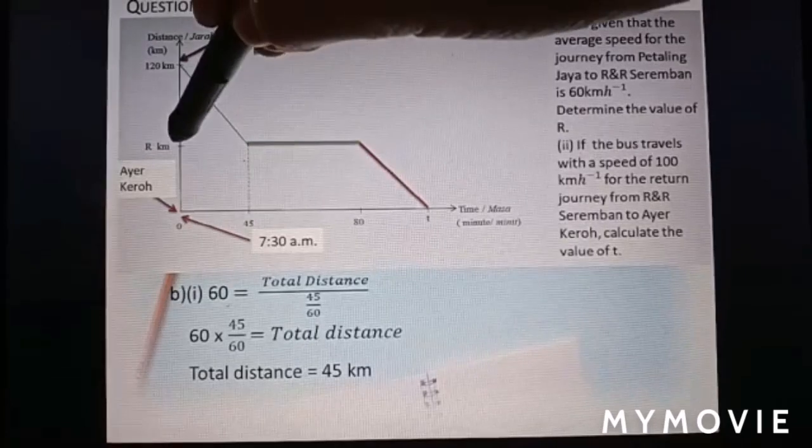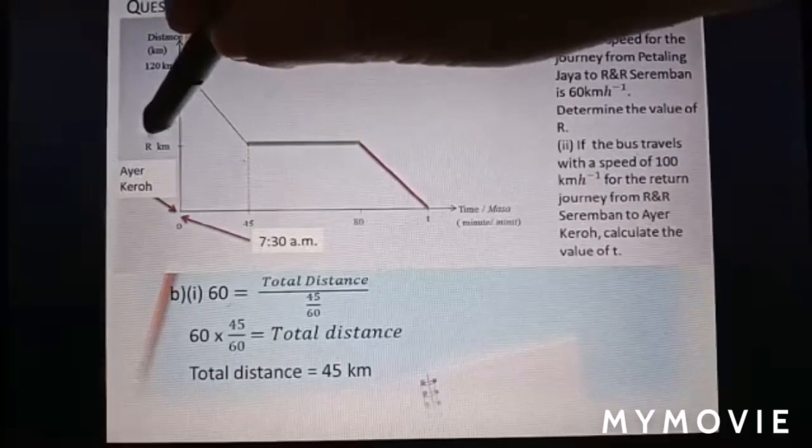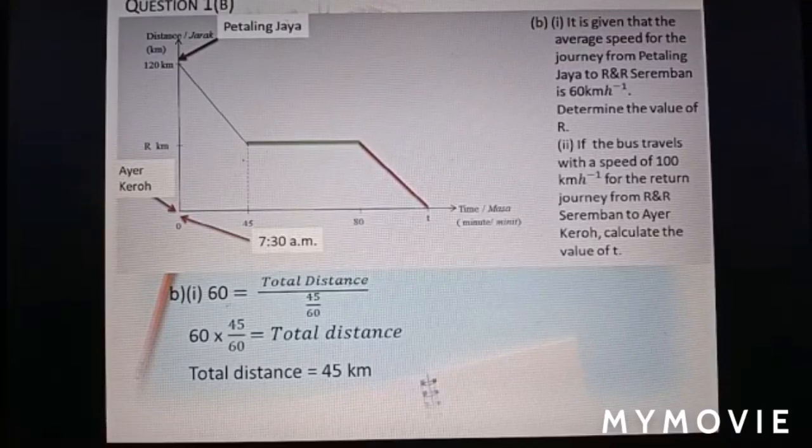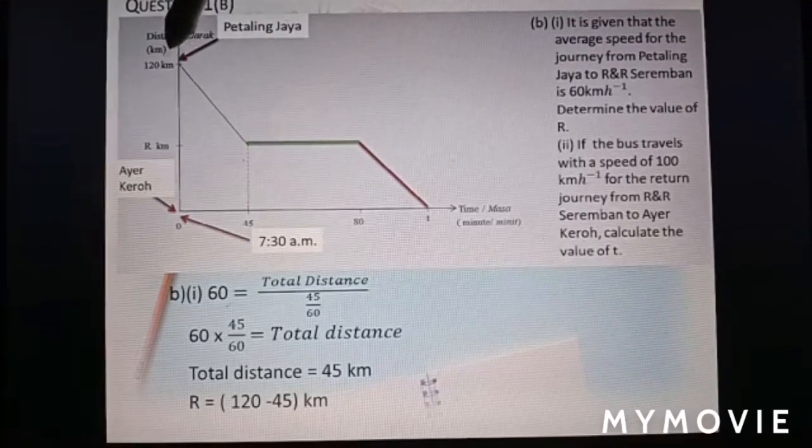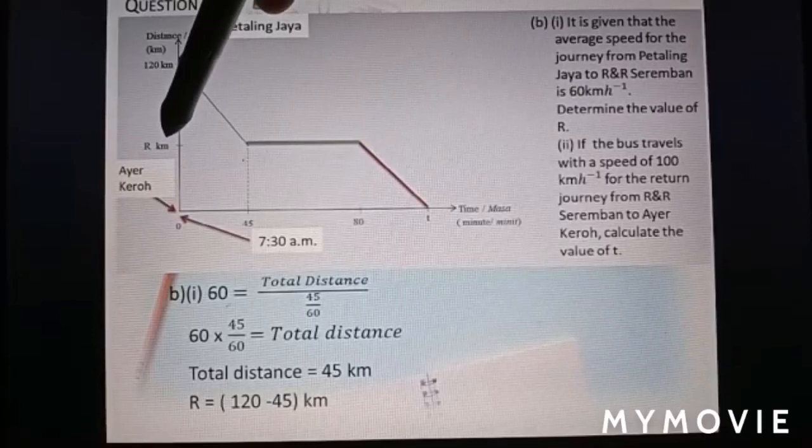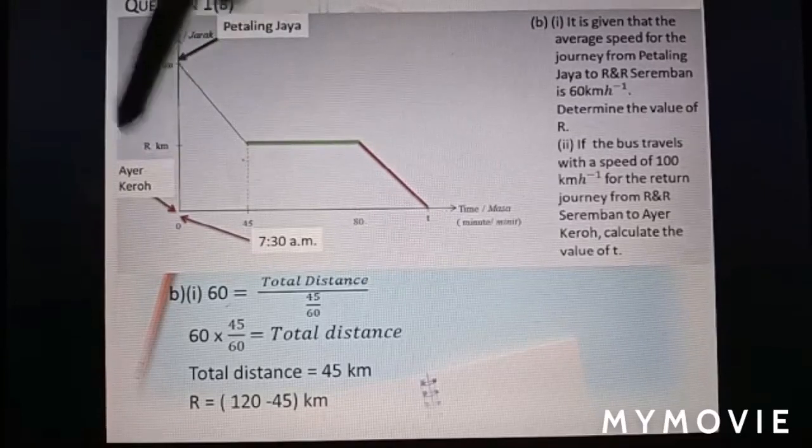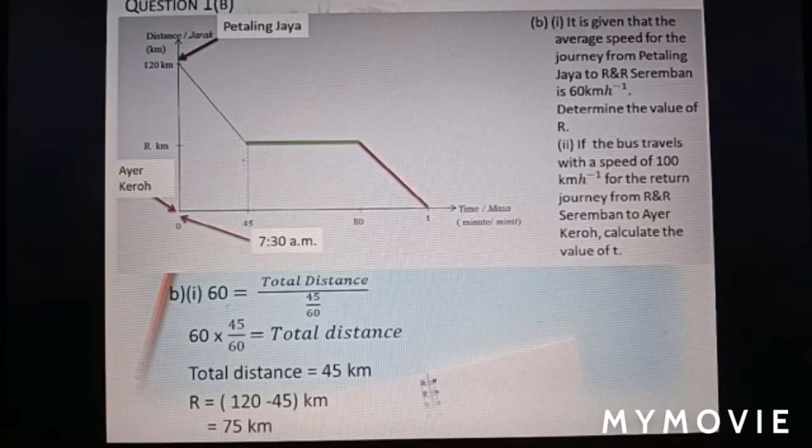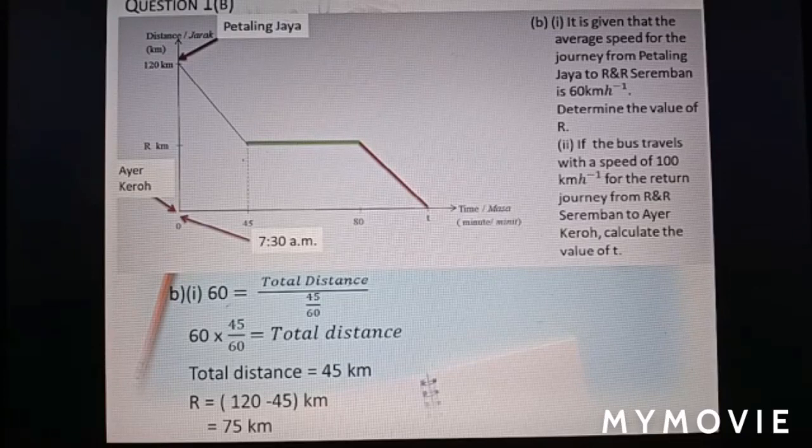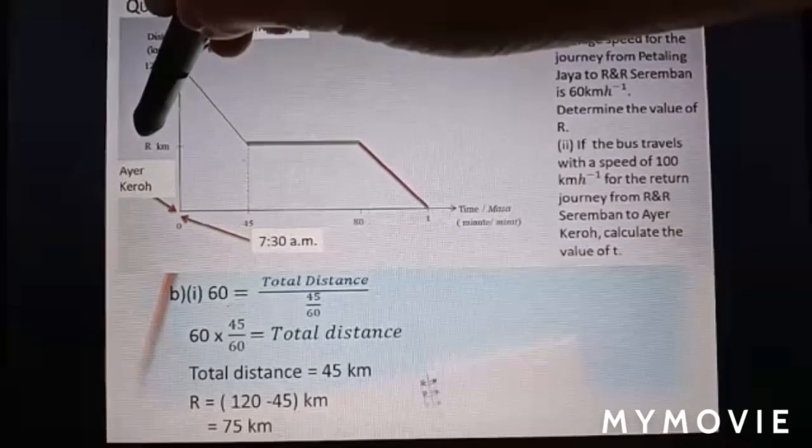As usual, this one move to the left-hand side, 60 times 45 over 60. Total distance is 45 km. Means from here go to here is 45 km. Now we need to find the value of R. Value of R, how to find it? 120 minus 45. Then we get this value. R equal to 75 km. So, here is 75 km.